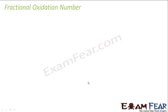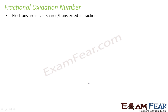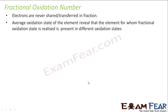Let's talk about fractional oxidation number. We'll see some scenarios where the oxidation number comes out to be fractional. The question that comes to our mind is: why do we have fractional oxidation numbers when we know that electrons are never shared or transferred in fractions? When there is a transfer of electron, it is totally transferred — never 50% or 60%. It's always the full transfer or sharing of electrons. So why do we have fractional oxidation numbers?